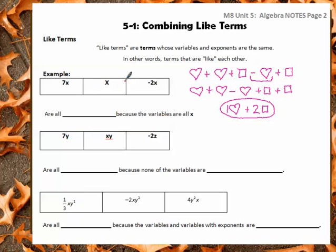Let's look at this in terms of letters. This one is an X, this one is an X, and this one is an X. Because they all have X, they are all like terms.